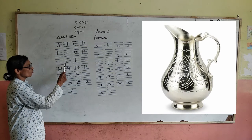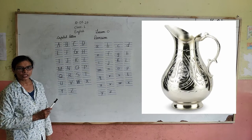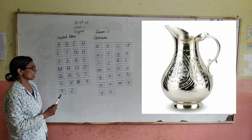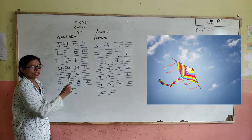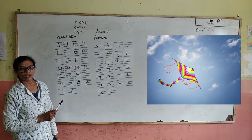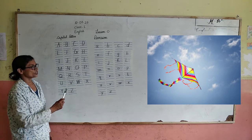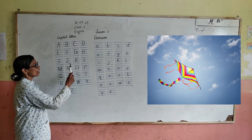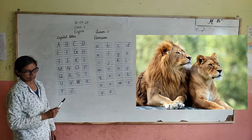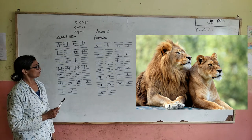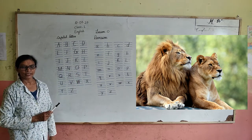J for jug — J-U-G, jug. K for kite — K-I-T-E, kite.